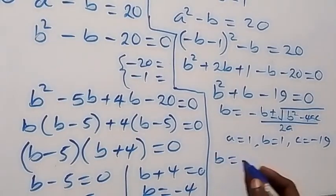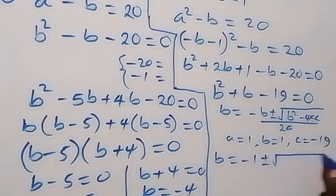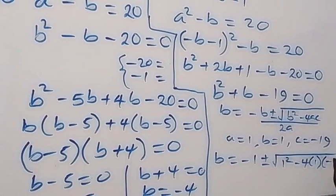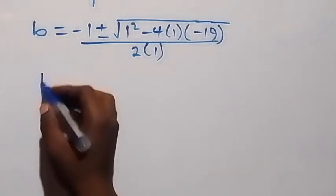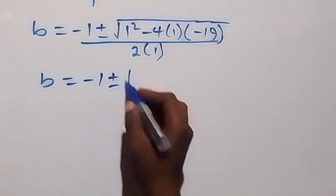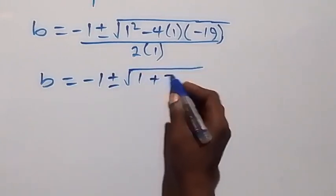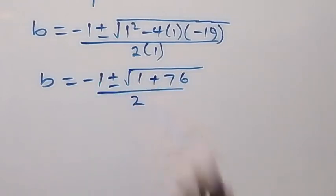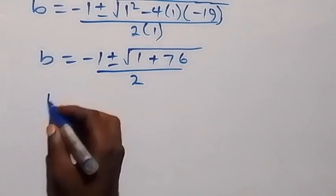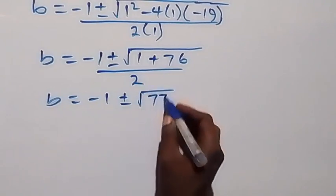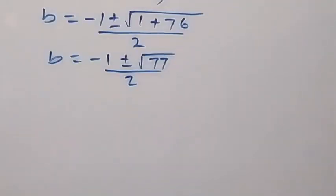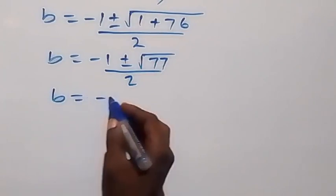Substituting into the formula, b equals minus 1 plus or minus square root of (1 squared minus 4 times 1 times minus 19), over 2 times 1. Simplifying, this becomes b equals minus 1 plus or minus square root of (1 plus 76), over 2. So b equals minus 1 plus or minus square root of 77, over 2.